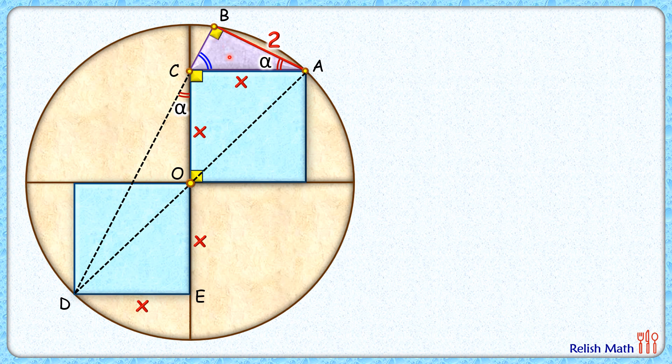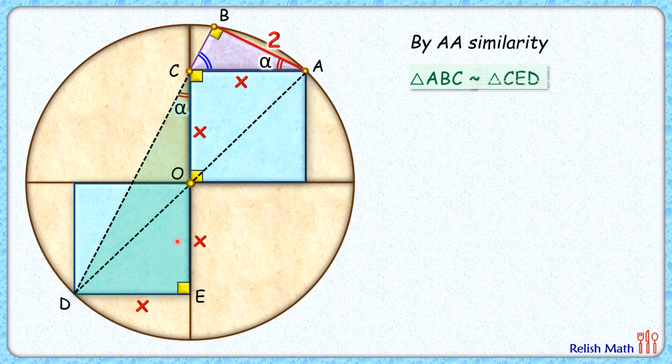Now if you look at this purple triangle and this green triangle here, the purple triangle has got angle alpha and 90, and the green triangle has got this angle alpha and this is the angle of a square, that's 90 degrees. So by angle-angle similarity we can say that these two triangles are similar, that is triangle ABC is similar to triangle CED.